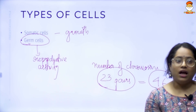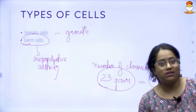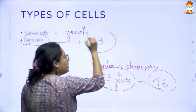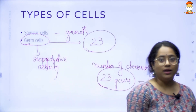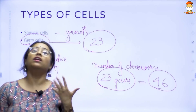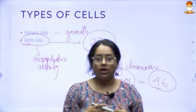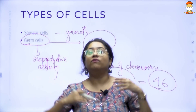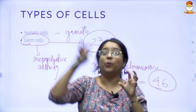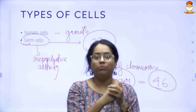Now comes an important point. In your somatic cell you have the complete 23 pairs. But in your germ cell, you don't have 23 pairs — you just have 23 chromosomes. Why? Because germ cells are used for reproductive activity. In reproduction, germ cells come from both parents. If we had 23 pairs in our germ cells, from each side we'd get 23 pairs — we would end up with 46 pairs of chromosomes in the resultant human fetus.